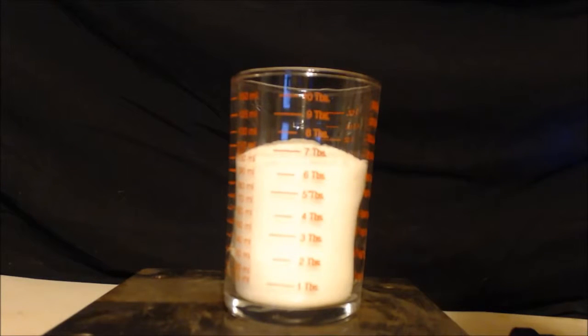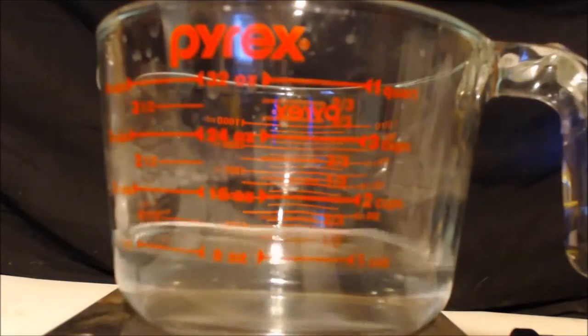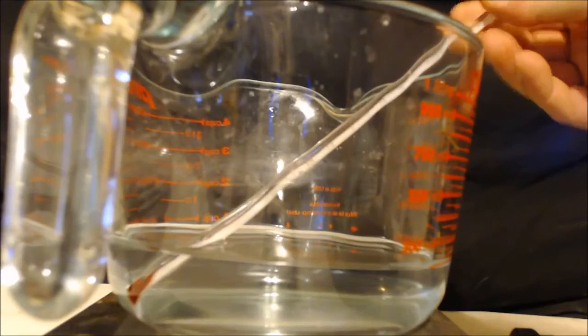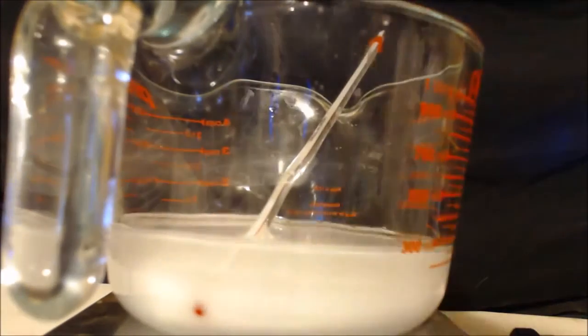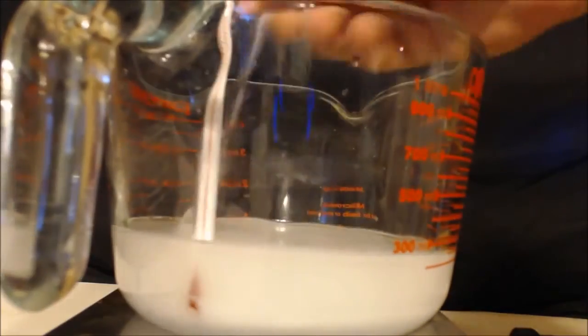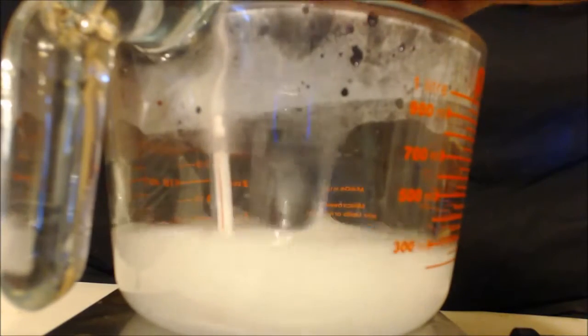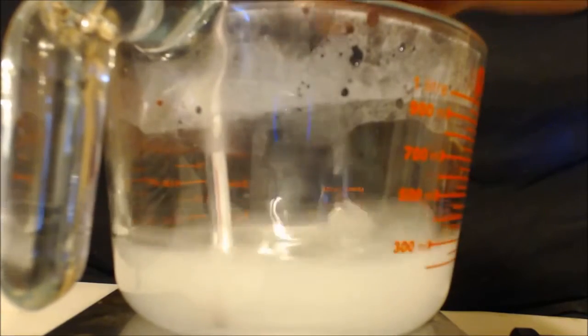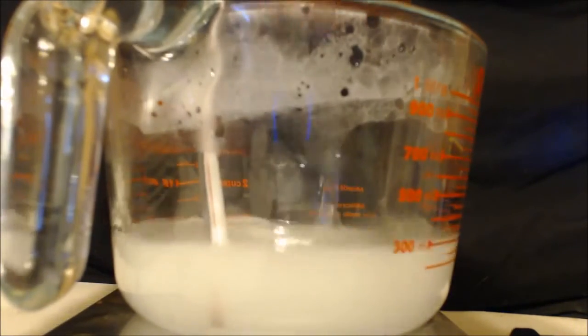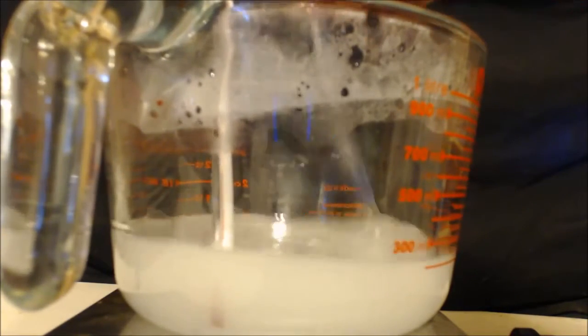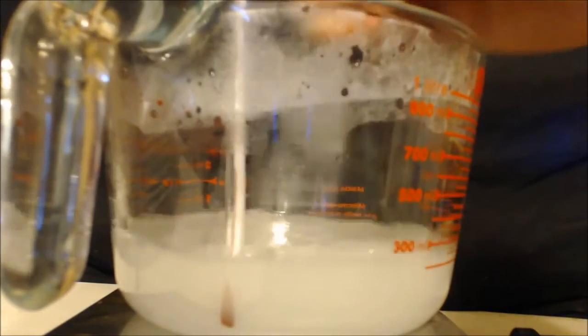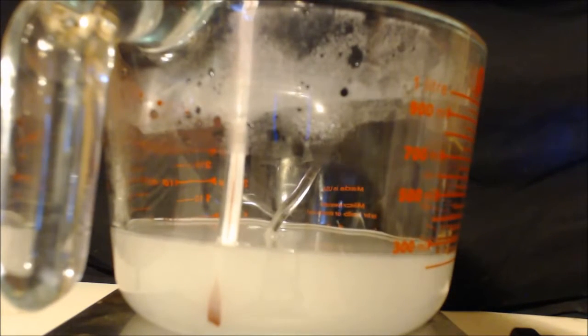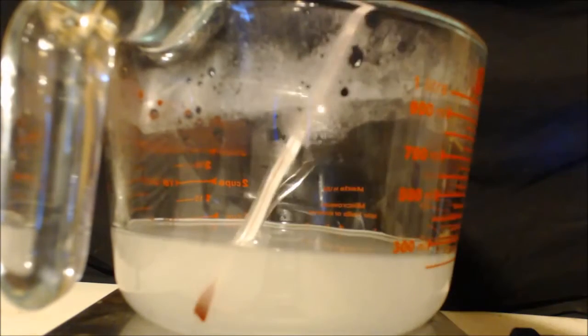All right, there's 120 grams of sodium hydroxide. Got an arbitrary amount of water there, starting out about 22 degrees Celsius. I'll dump it all in at once. 80, 85, 90. Can we get it to boil? 95. Close, 95. Now it's starting to go down.